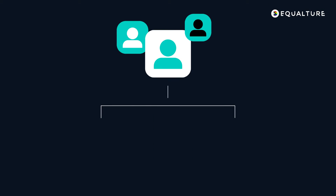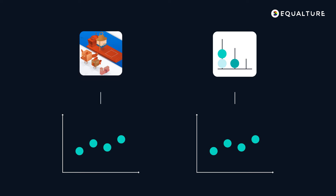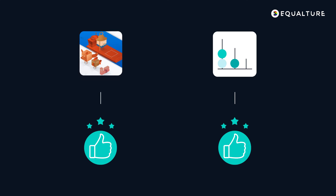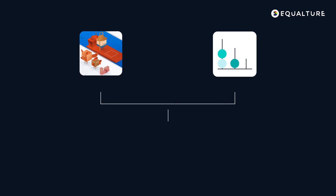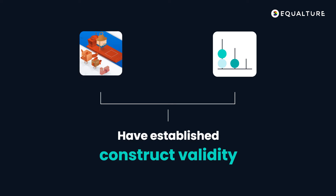In the case of the fairy game, which measures problem-solving ability, we let the participants play the fairy game and also do the Tower of London task — the previously validated task of problem-solving ability — and then we checked for patterns in the data. We checked whether our assumption was correct: that the people who do well on the game also do well on the task, and the people who do poorly on the game also do poorly on the task. When this is the case, we can safely assume that both the game and the task measure the same underlying construct, and therefore have established construct validity.